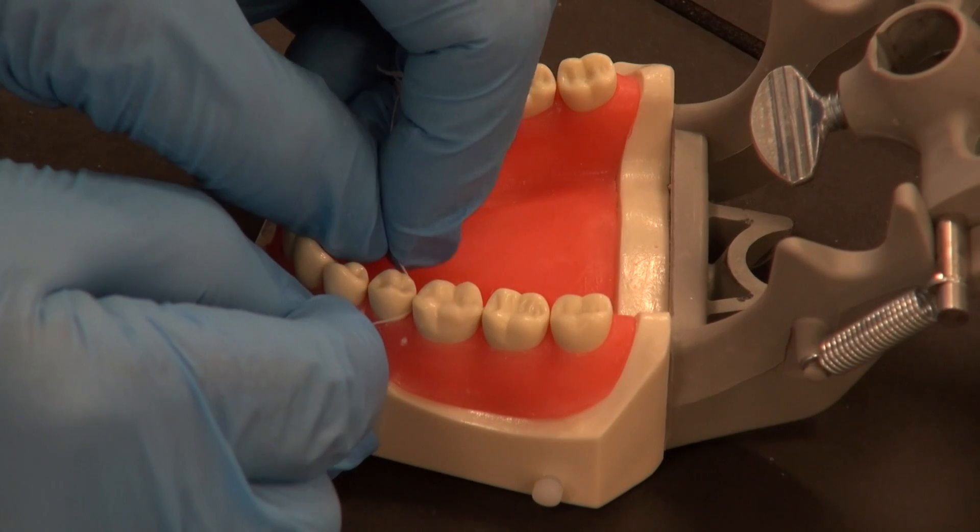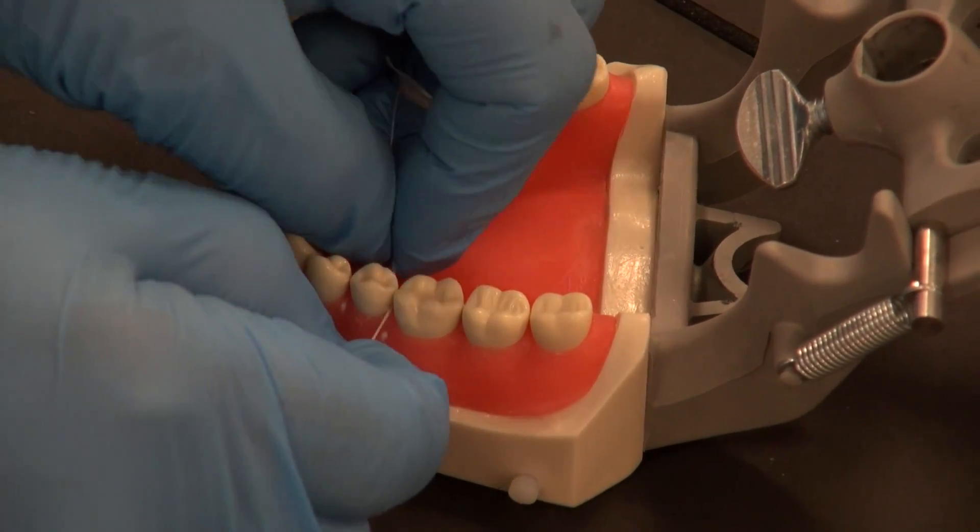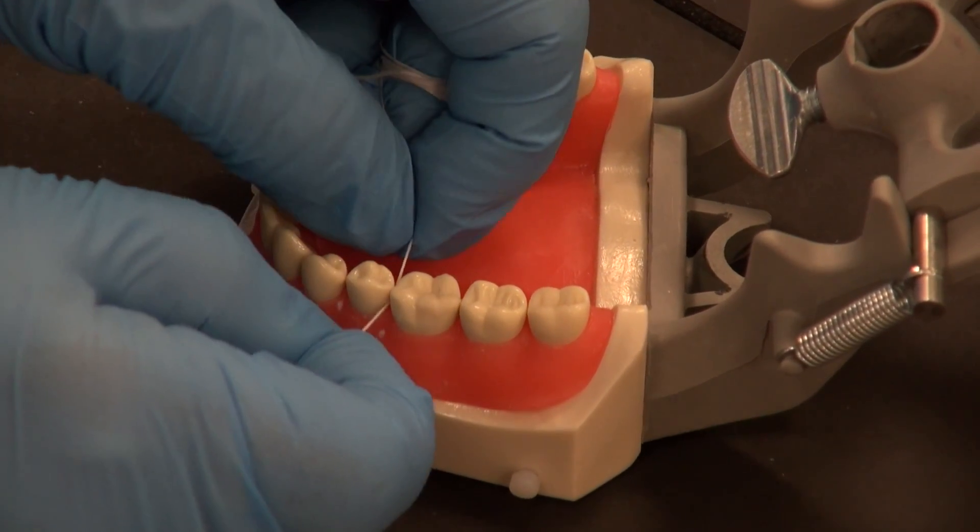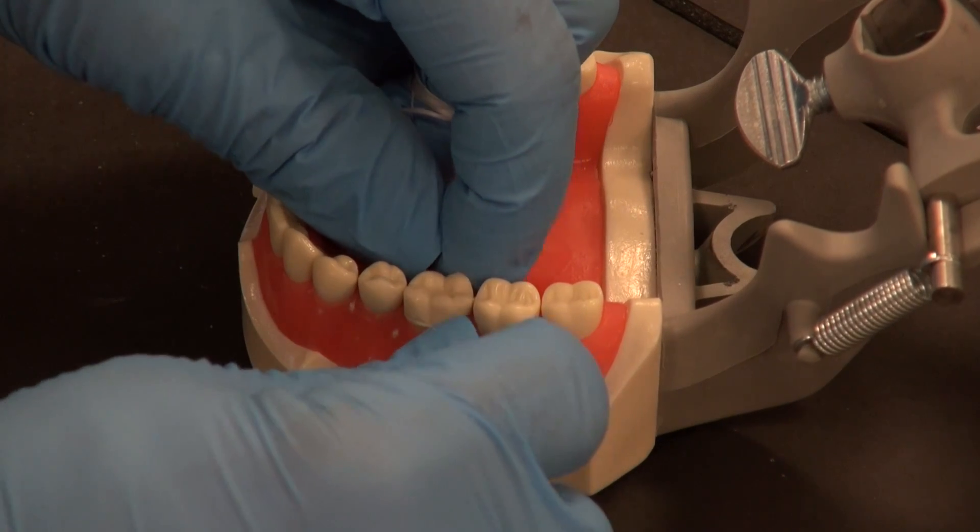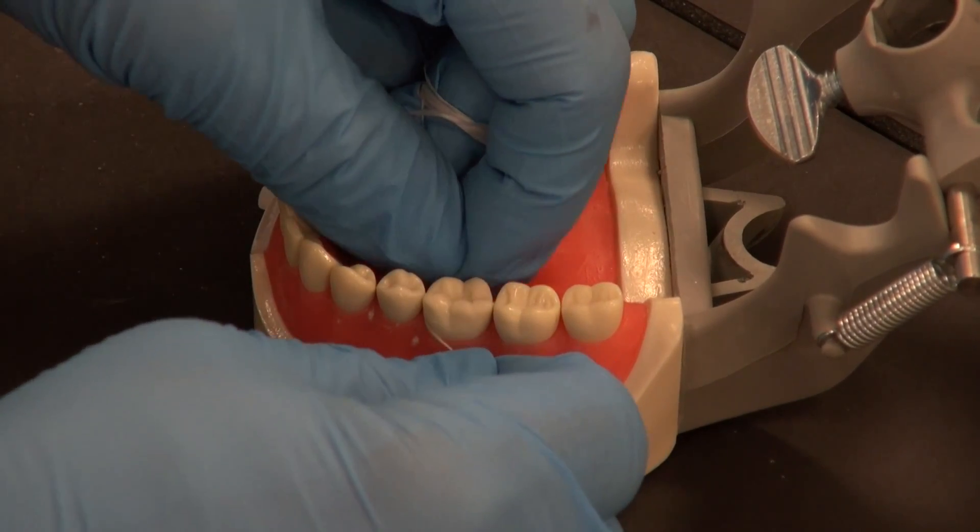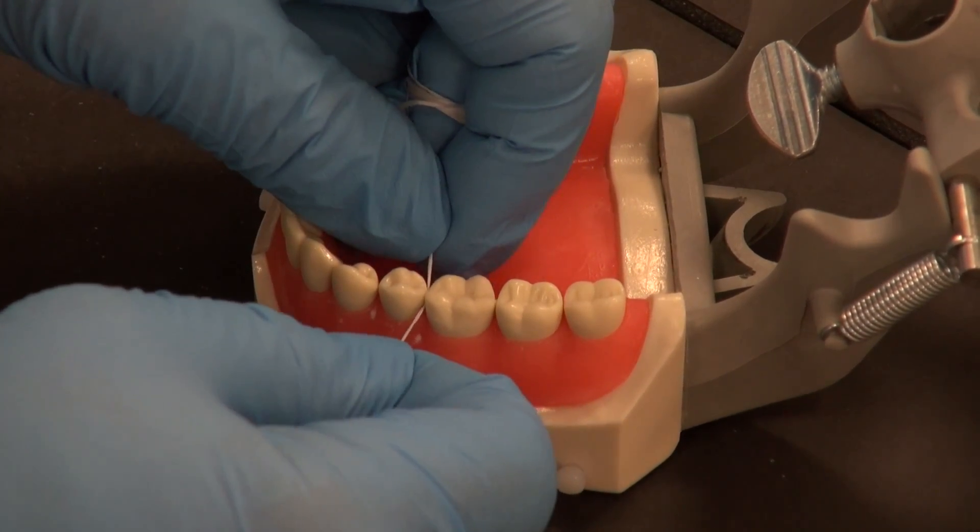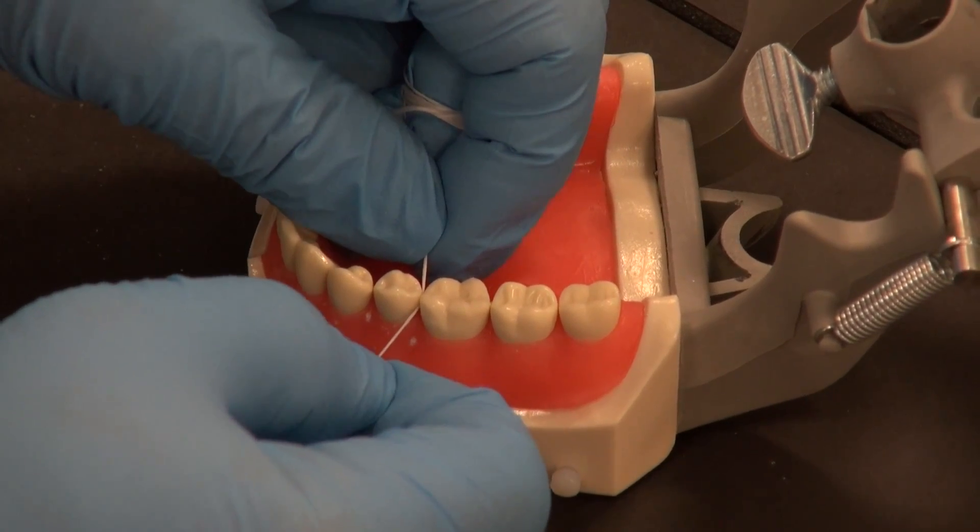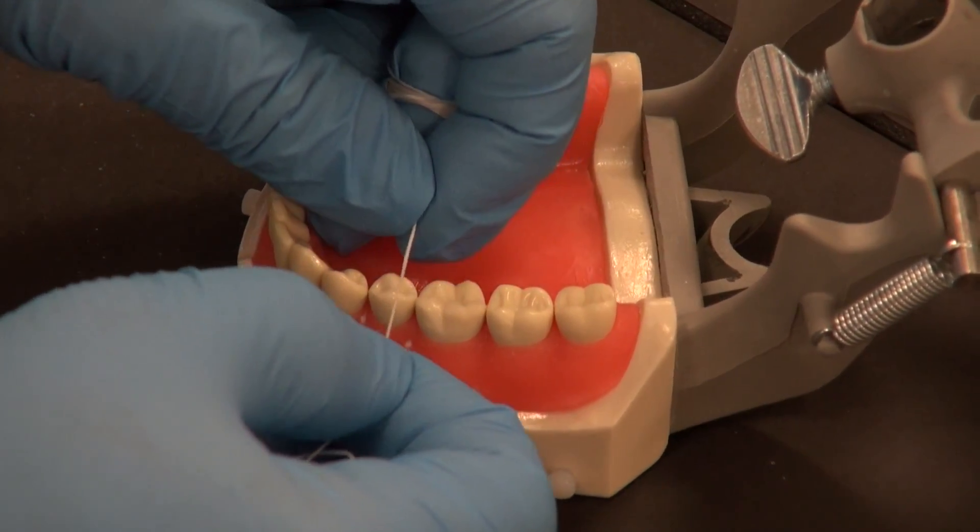Once you're in the contact, you want to wrap it around. One, two, three. And up and over the papilla. One, two, three. Seesaw out so that the floss doesn't break or fray. If you pull it straight out, it has a tendency to break.